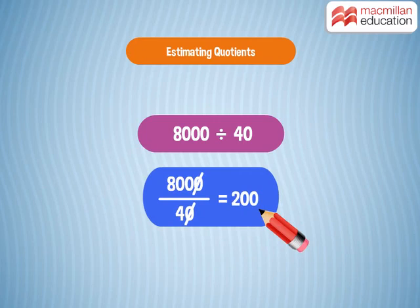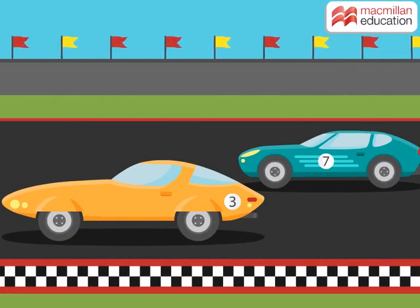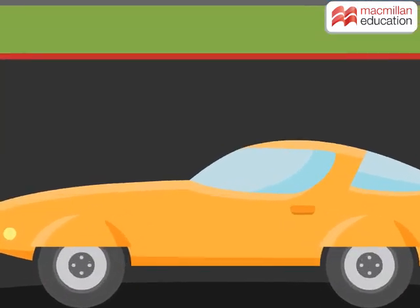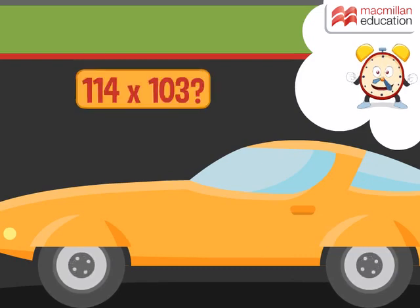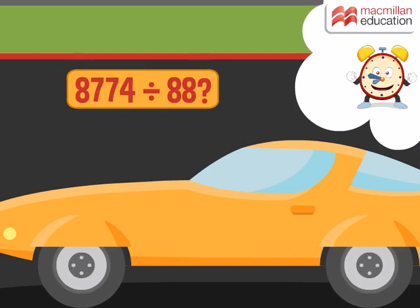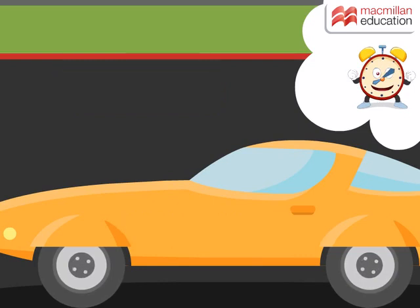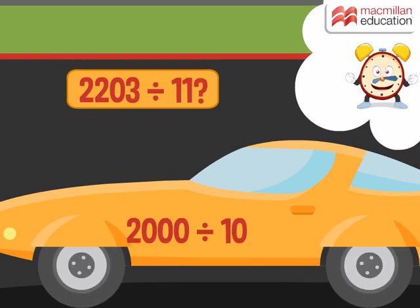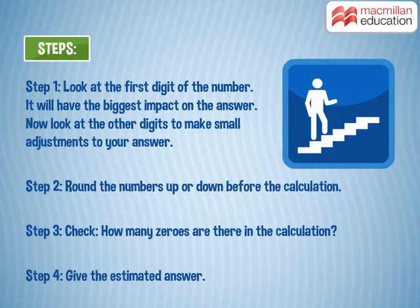And with that, you are ready for the great estimation race! Check your ability to estimate products and quotients — you have to be very quick. 57 into 96? 6,000. Yes! 114 into 103? 10,000. That was quick! 8,774 divided by 88? 100. Well done! 2,203 divided by 11? 200. Awesome! You just got through the race. These are the quick steps you can follow to do calculation using estimation.